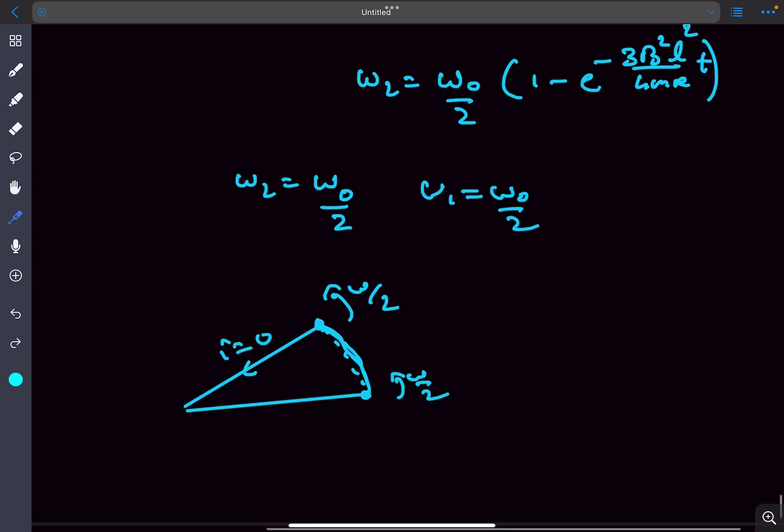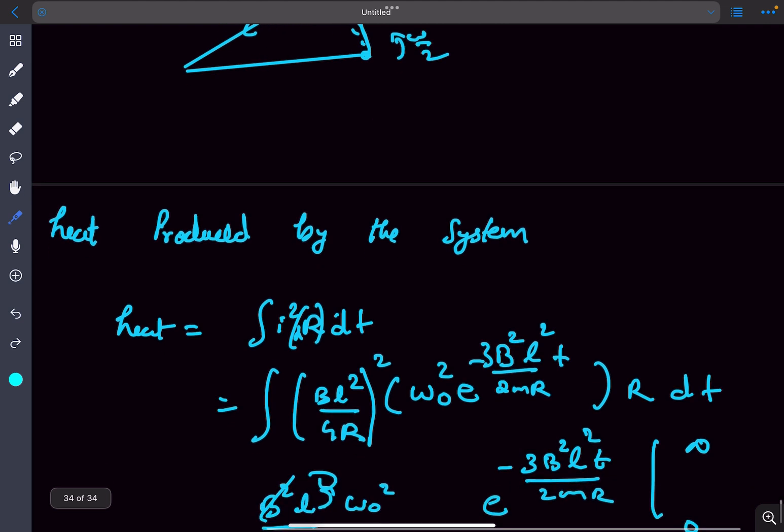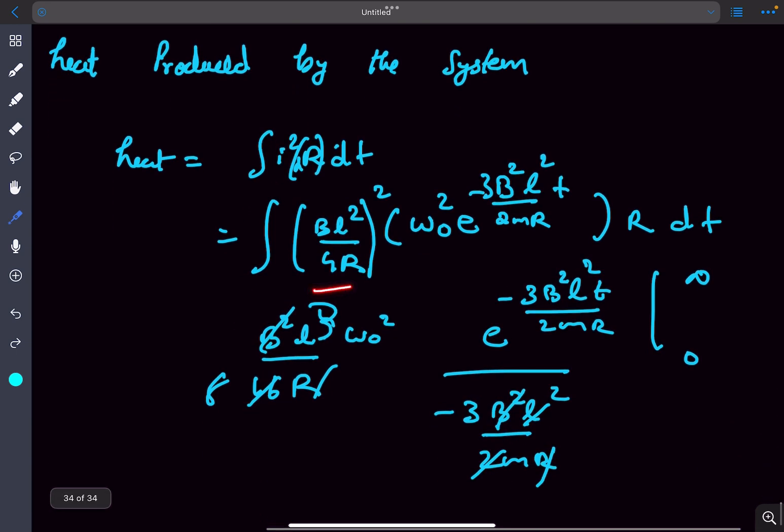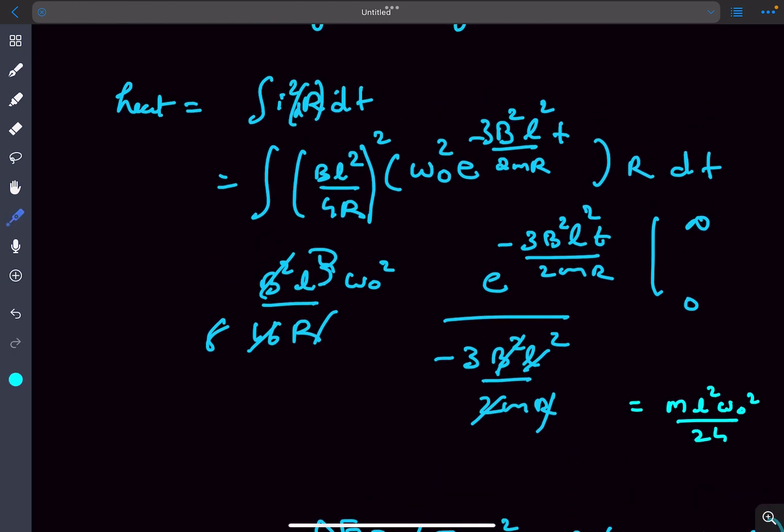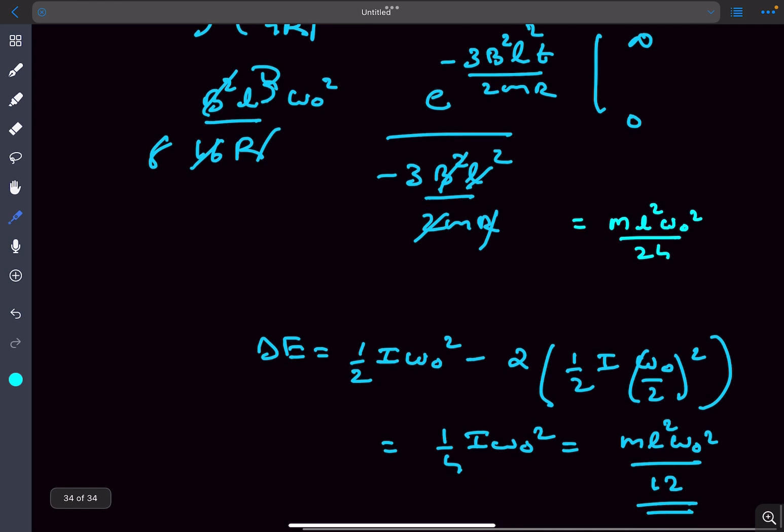Now we have to find the heat produced by the system. For that there are two methods. One method is to just directly integrate the heat dissipated through the resistors. It should be I square times 2R times dt because the net resistance is 2R. Now we just have to integrate it from zero to infinity, and I we determined earlier. From that you'll get the answer to be mL square omega naught by 24.